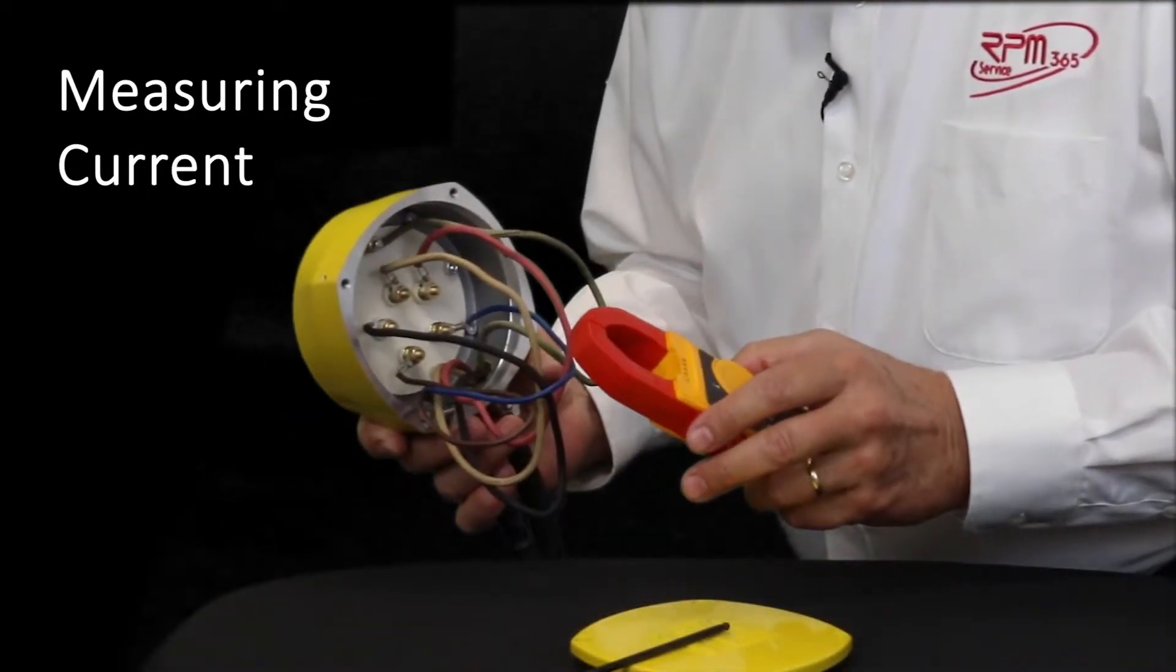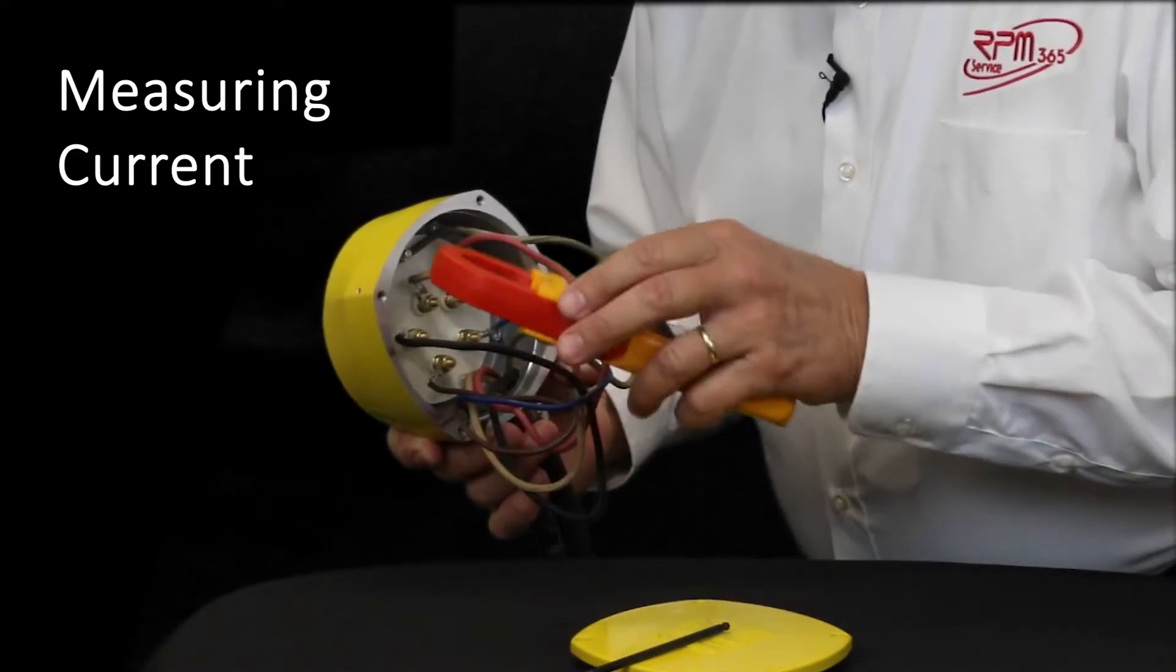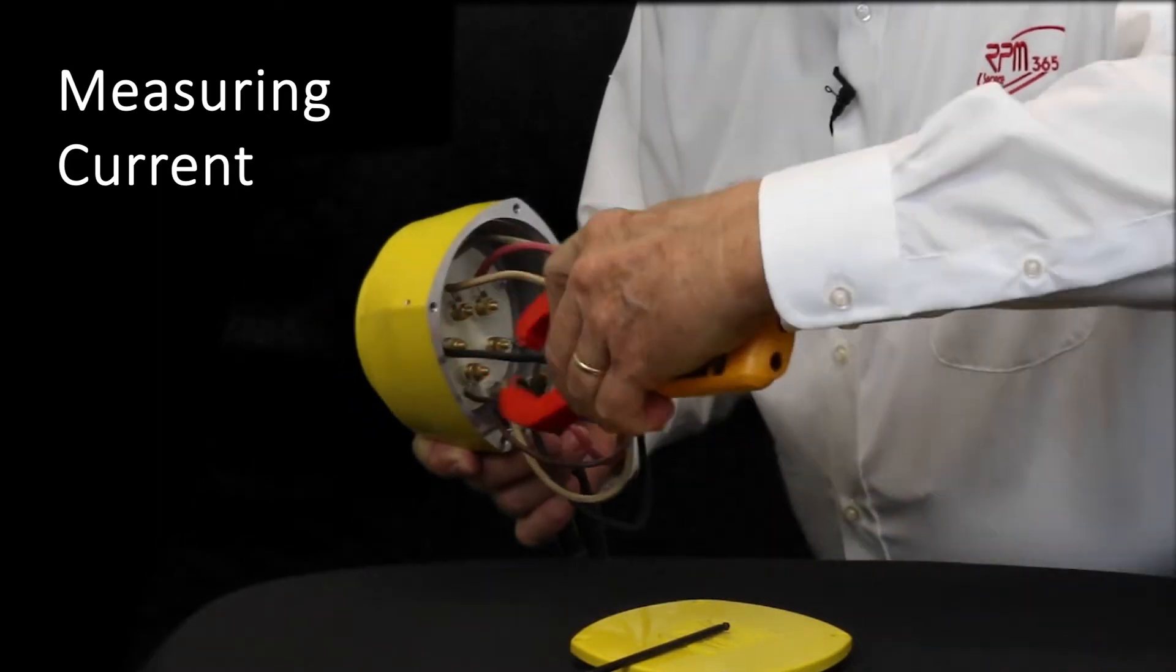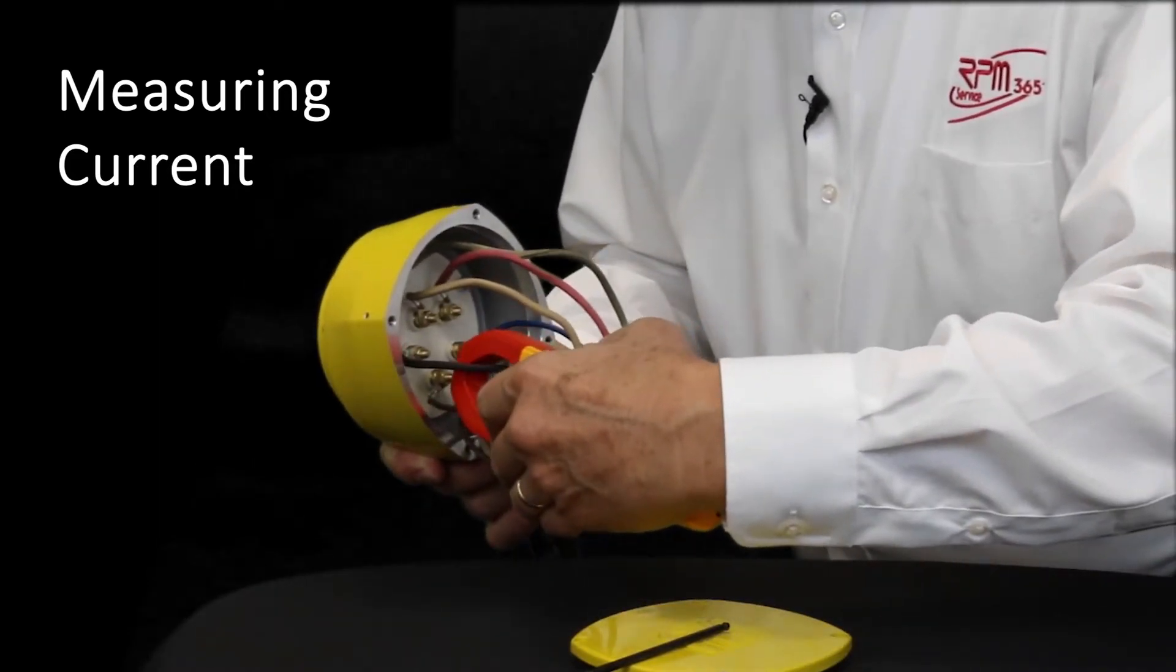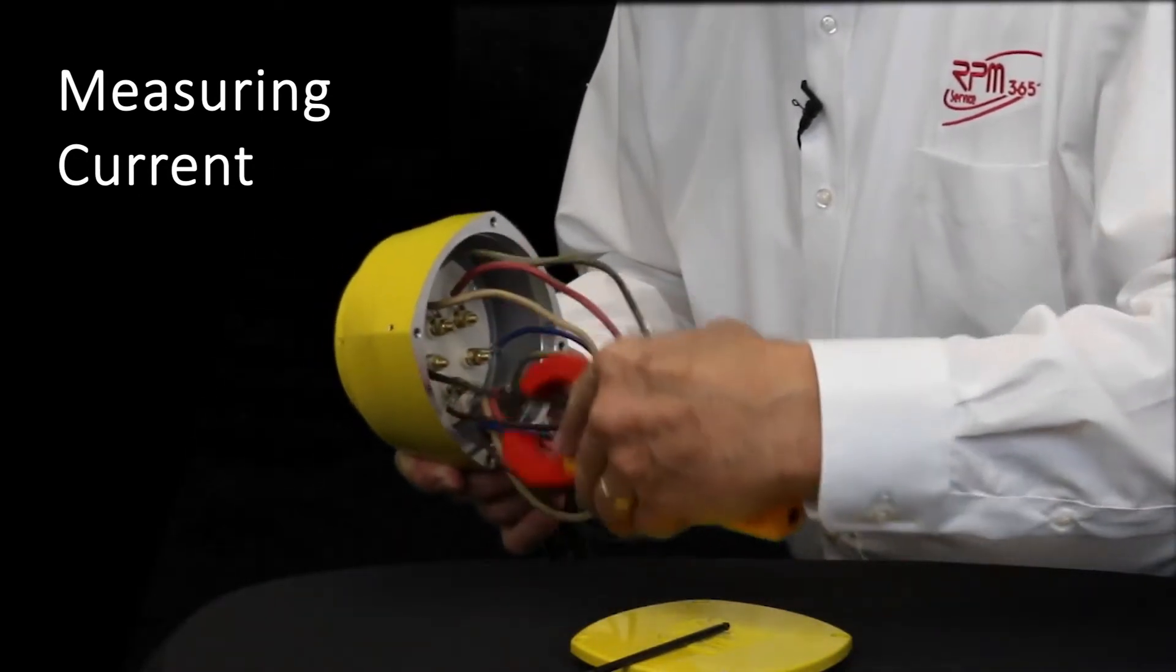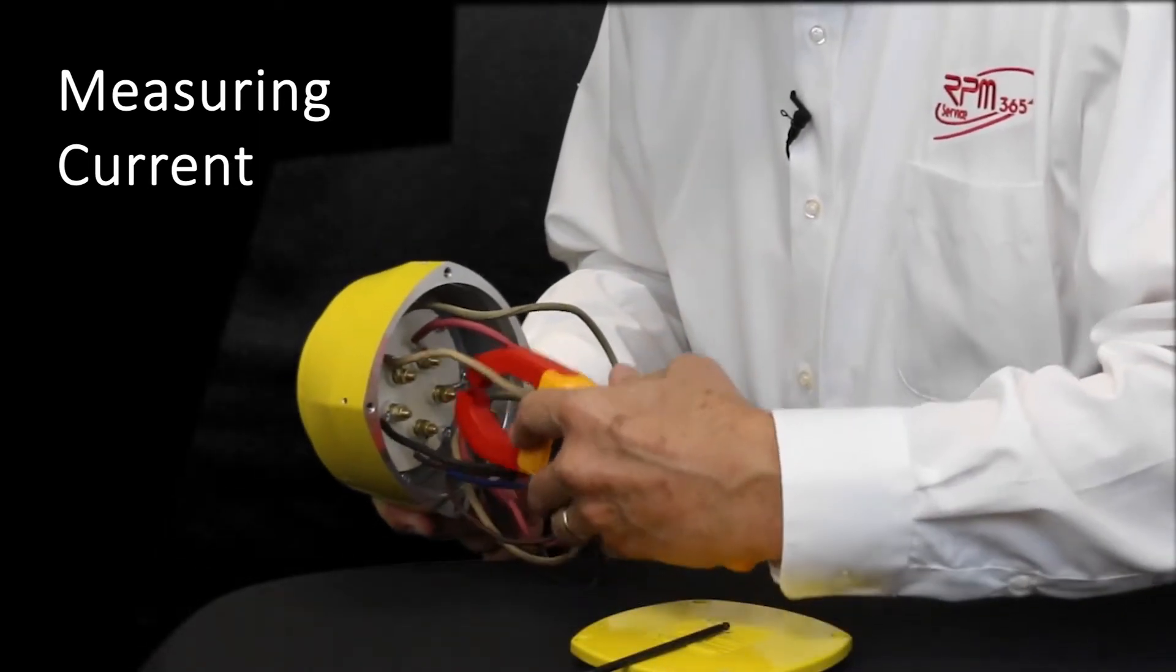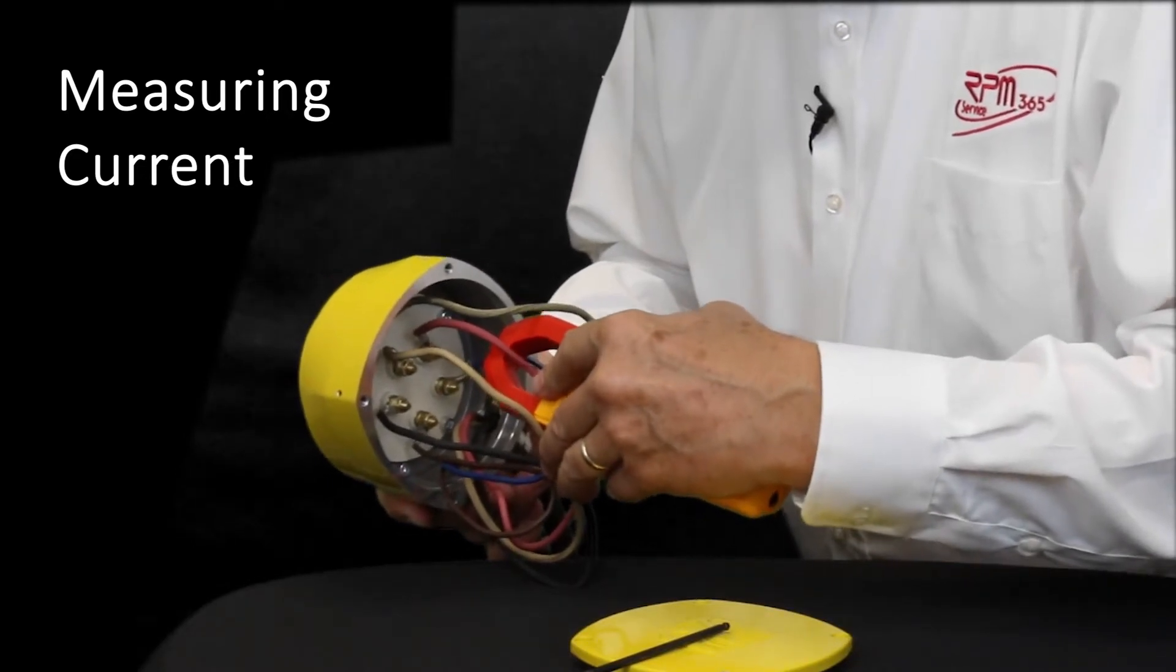How do we measure the current flowing to the motor? We use a clamp meter. We set it to position A to measure amps. And we simply put the clamp meter around the conductor as shown. That would measure phase one. This would measure the current in phase two. And this would measure the current flowing in phase three.